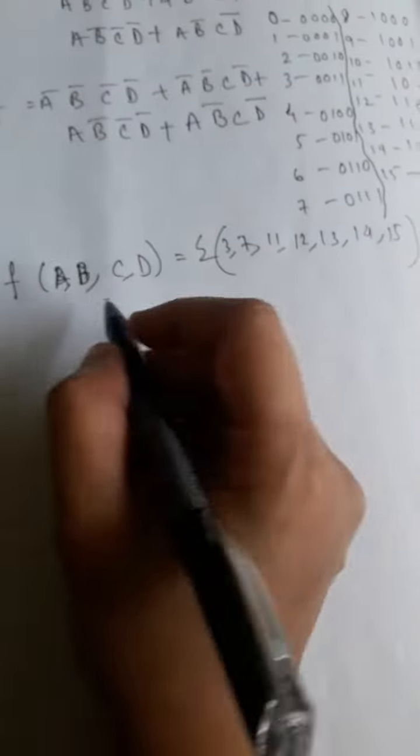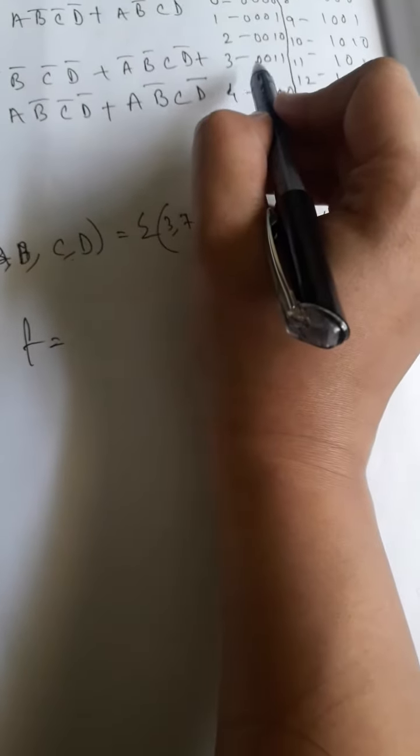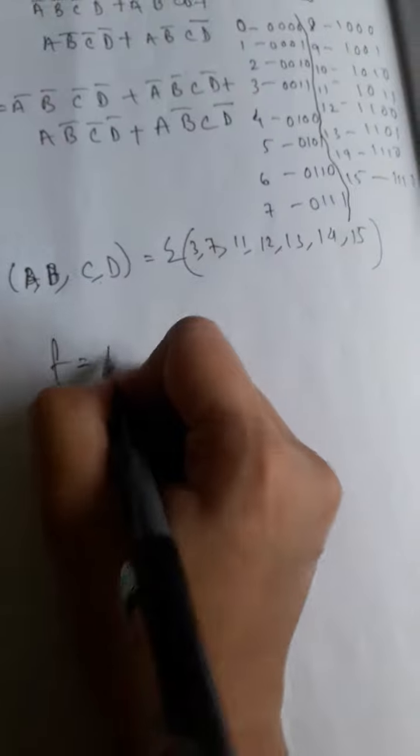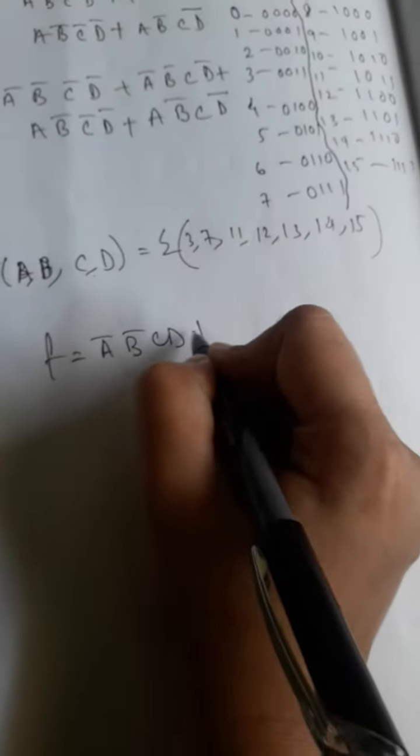For 3, the binary is 0011, which you can see from here. That means A bar B bar C D plus